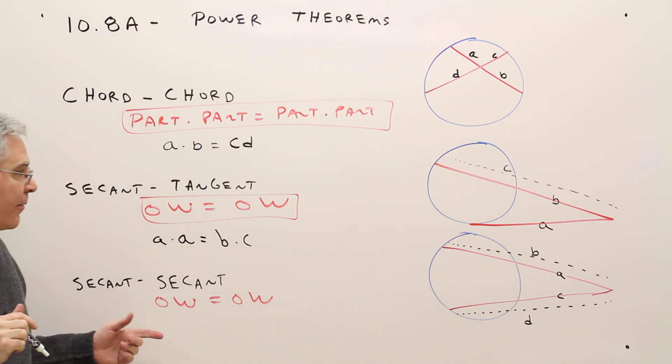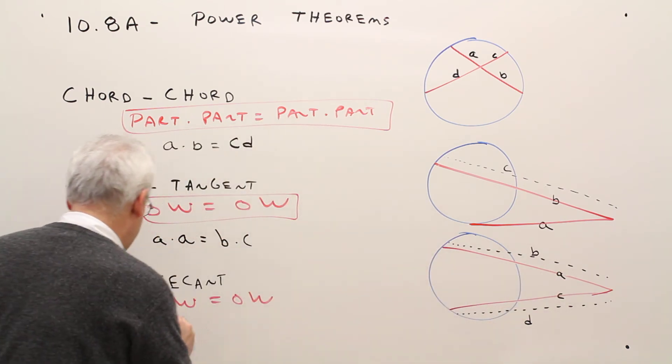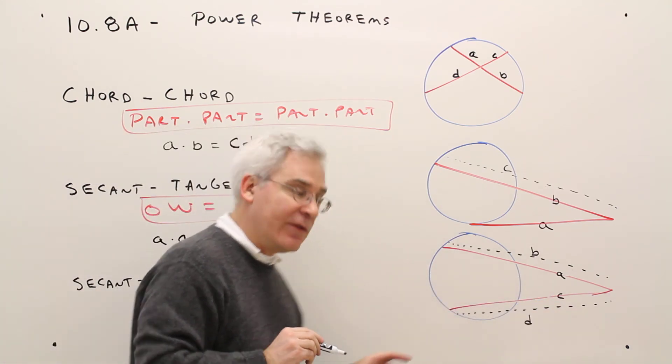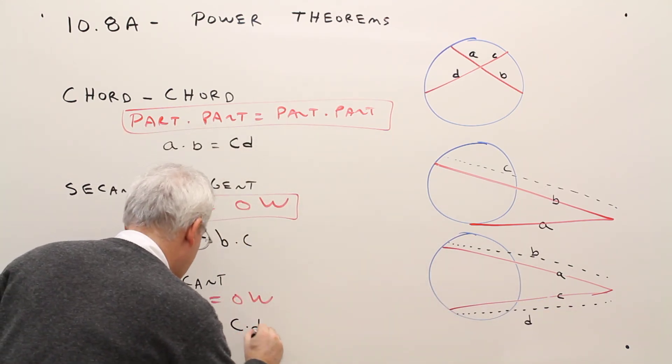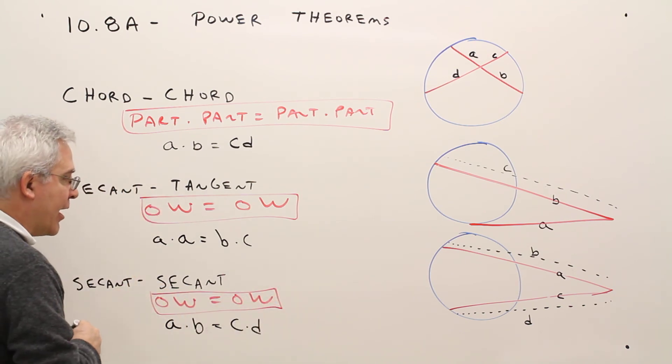Same thing over here. Here, a is on the outside, b is the whole. C is on the outside, d is the whole. And once again, I much prefer ow equals ow.